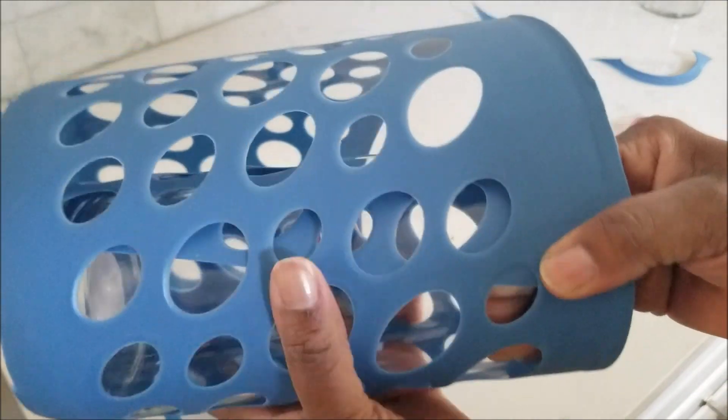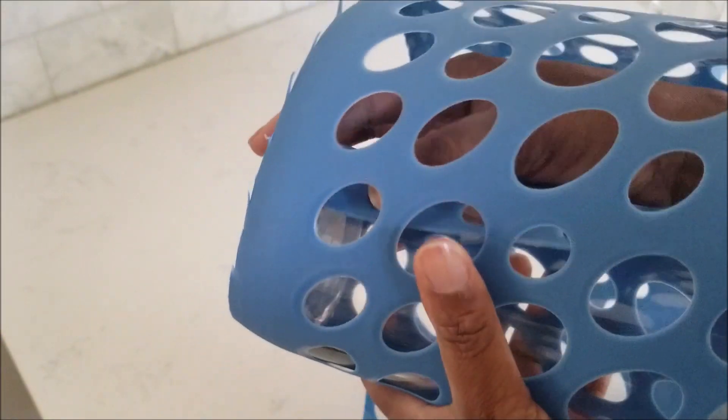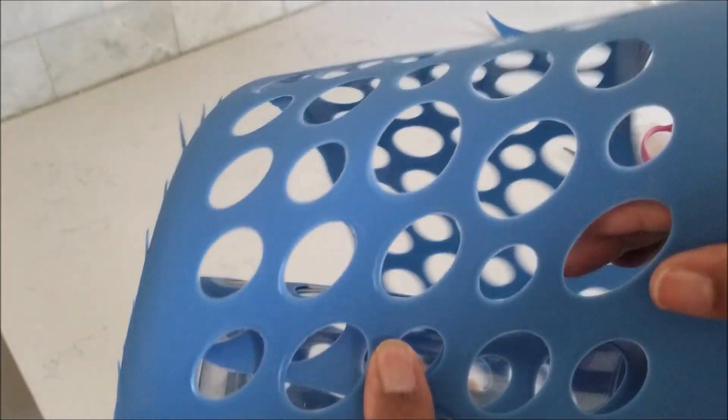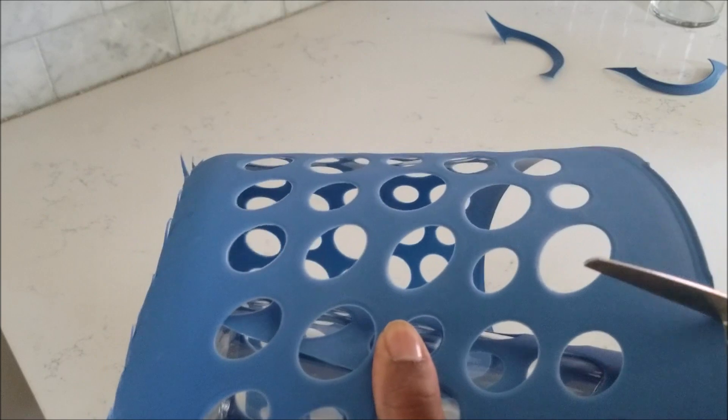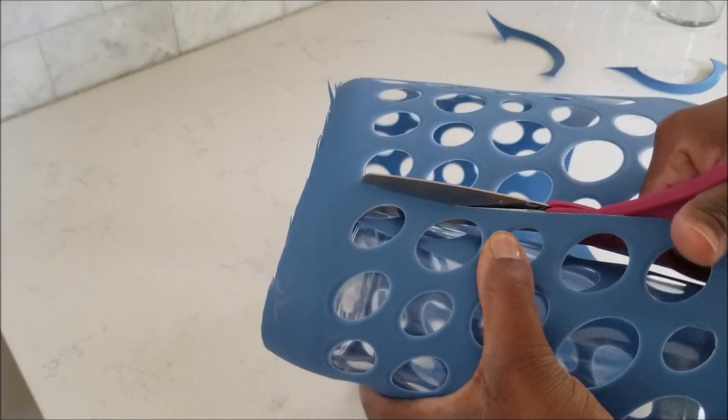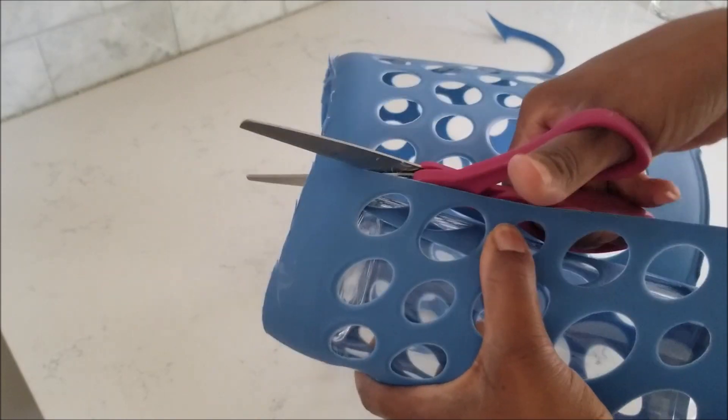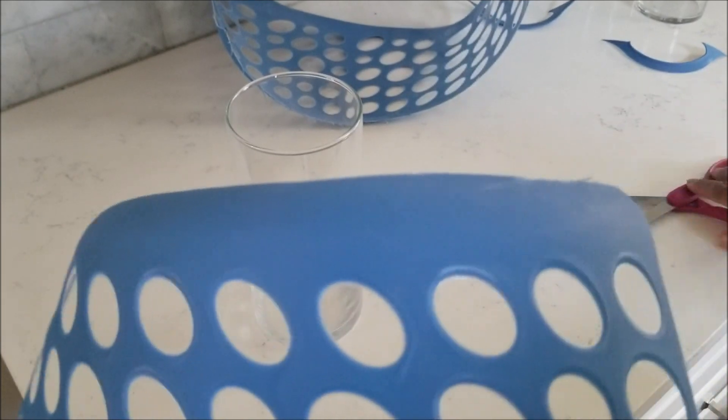Once you're done with that, you're going to wrap it around the vase to see how much you need to cover the vase entirely with a little overlap, and then just cut it.